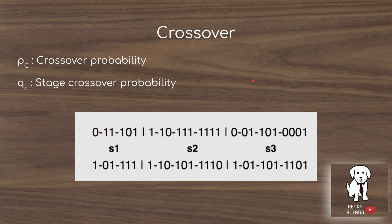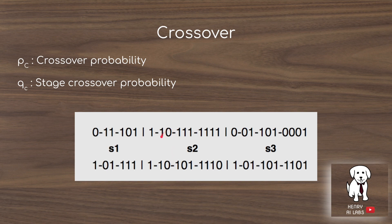Crossover in Genetic CNN involves swapping stages between two successful parent networks selected for the next round. This works with the P_C probability parameter controlling whether crossover happens at all, and Q_C as the parameter used while traversing stages to decide whether to swap them. Stages define microarchitectures operating at the same spatial resolution — stage one at 32x32, then 16x16, then 8x8 — so with this crossover probability, stage S2 from one parent might replace the corresponding stage in the other.